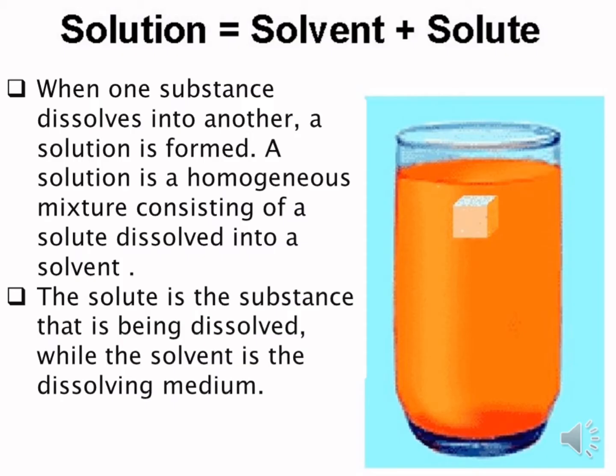A solution has two components. When one substance dissolves into one another, a solution is formed. A solution is a homogeneous mixture consisting of a solute dissolved into a solvent. The solute is a substance that is being dissolved, while the solvent is a dissolving medium.